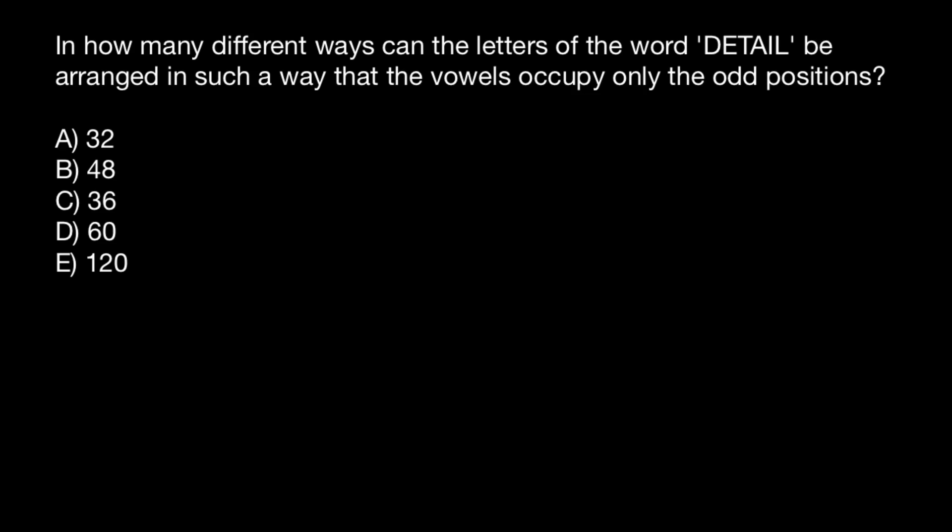Hello and welcome to Nikolai's genetics lessons. Today I have prepared another combinatorics problem for you. Knowing how to solve this type of problem would greatly help you in bioinformatics class. And here is the problem: In how many different ways can the letters of the word DETAIL be arranged in such a way that the vowels occupy only the odd positions?